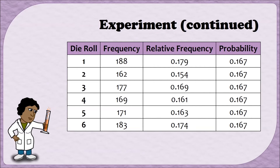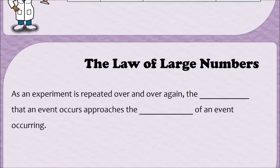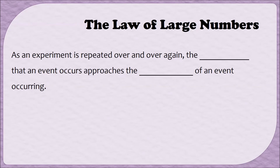This is a trend we'll notice happening the more often you repeat an experiment. The more often you conduct an experiment, the closer the proportions are going to end up being to the probabilities. This is such an important rule for statistics that it gets its own name: the Law of Large Numbers. As an experiment is repeated over and over again, the proportion that an event occurs approaches the probability of that event occurring.